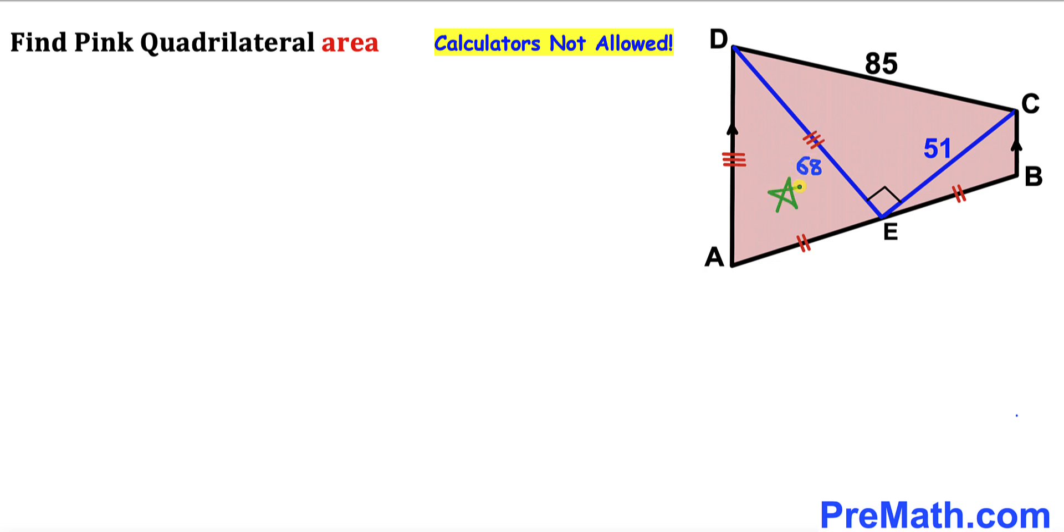Let's make an observation once again in this isosceles triangle ADE. This side length DE is equal to this side length AD. If this side length is 68, this side length AD has got to be 68 as well. Now we have many options to calculate the area of this pink quadrilateral ABCD.